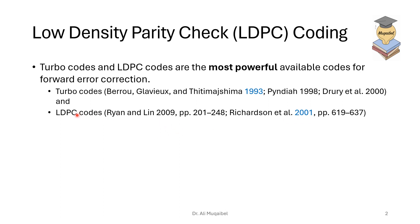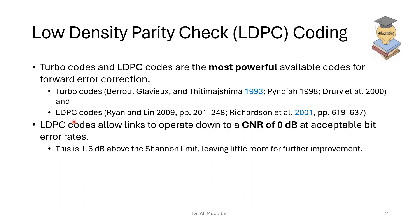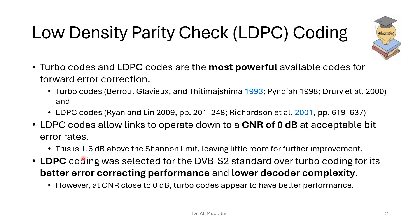LDPC codes allow links to operate not just at 2 dB — they can work with a carrier-to-noise ratio as low as 0 dB with still acceptable bit error rate for many applications. Remember that 0 dB is only 1.6 dB above the channel limit, which means there is very little room for improvement — we're getting very close to the theoretical limit.